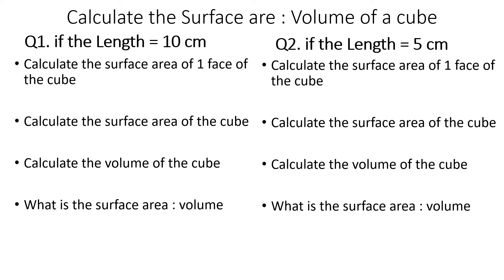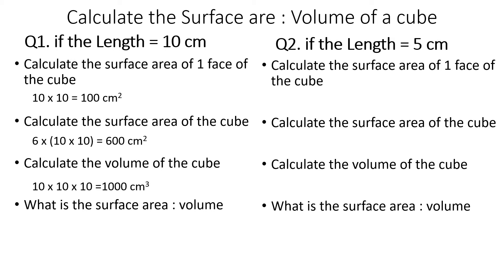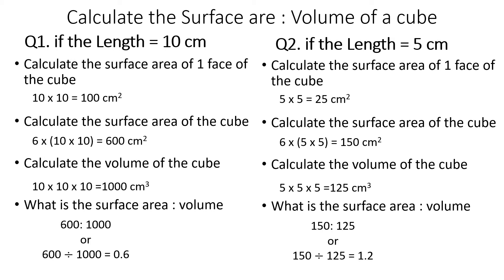We've got two questions: calculate the surface area to volume ratio if the length of the cube is 10 cm, then do the same if the length is 5 cm. For 10 cm: one face = 10 × 10 = 100 cm²; total surface area = 600 cm²; volume = 10 × 10 × 10 = 1000 cm³; SA:V ratio = 600:1000, or 0.6. For 5 cm, using the same method, we end up with a surface area to volume ratio of 1.2.